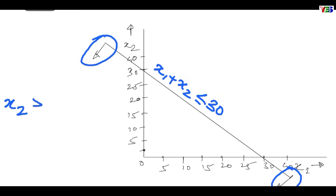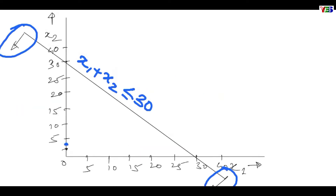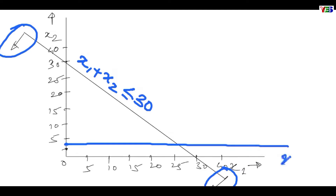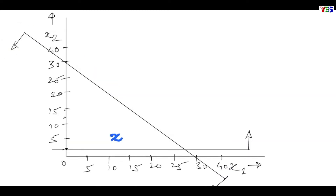The next constraint is x2 greater than or equal to 3. So we draw the x2 equal to 3 line. Point 3 will be somewhere here and we draw a line like this. Since it is greater than or equal to 3, the arrow will cover all the values above this line.